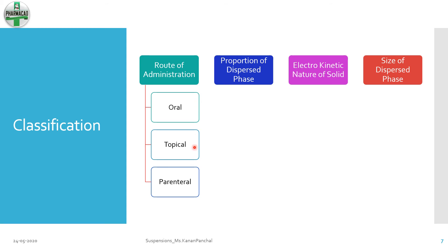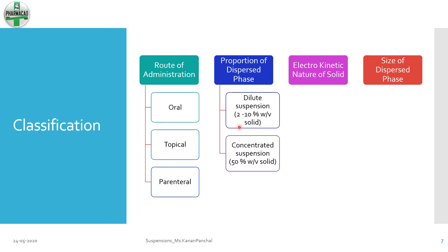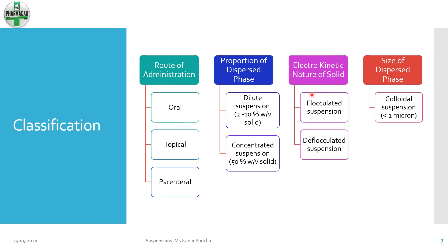Topical suspensions include those applied on the skin as well as ophthalmic ones. The proportion of dispersed phase can be either dilute — 2 to 10 percent weight by volume — or concentrated, which usually has solid content up to 50 percent weight by volume. The electrokinetic nature of the dispersed phase can make the suspension either flocculated or deflocculated. The size of the dispersed phase can be colloidal (less than 1 micron) or coarse (greater than 1 micron). If in the nano range, it becomes a nanosuspension; if in the micro range, a microsuspension.